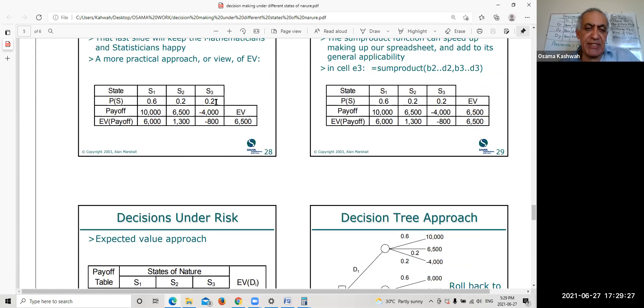You will set a probability distribution for the three states of nature. You have state of nature one, state of nature two, state of nature three. And you will put the probability distribution for them. As example, this is done by the management, not us. So the management will put a probability. As example, in state one, there is a probability to get $10,000. 60 percent to have return or earnings of $10,000. And 20 percent to have $6,500. And 20 percent means to have minus $4,000 in the states of nature three. So we put a probability distribution.